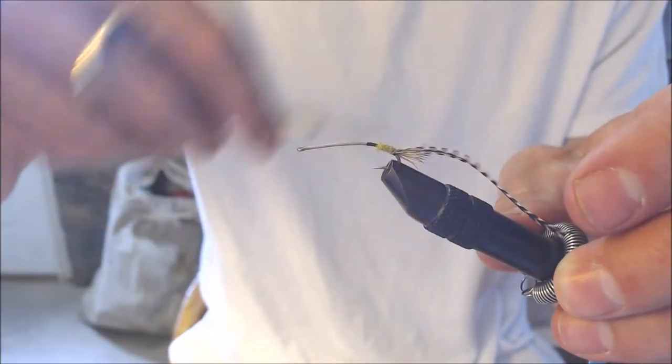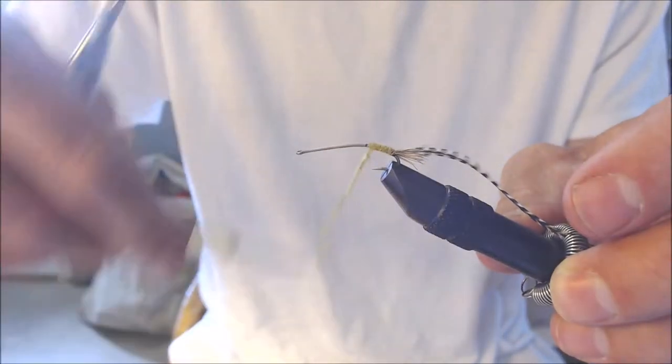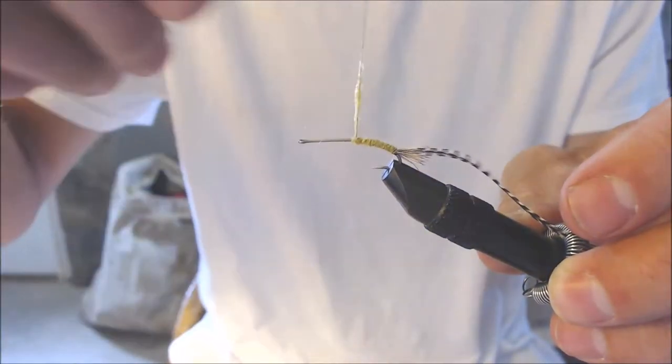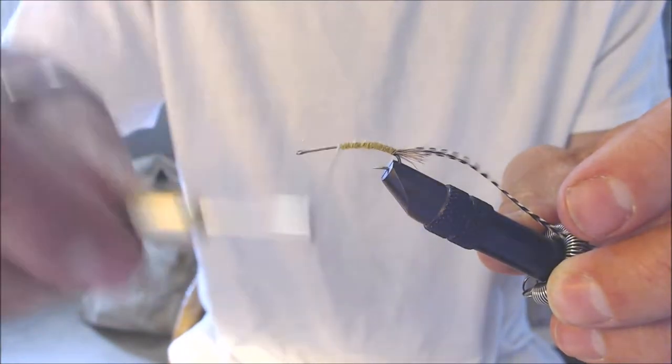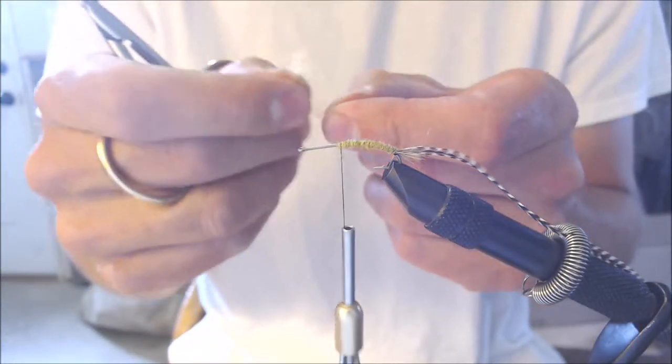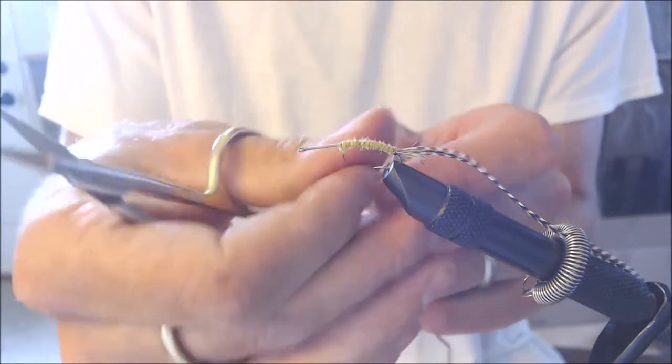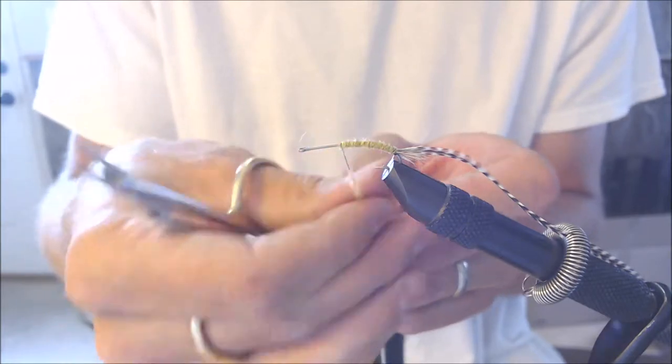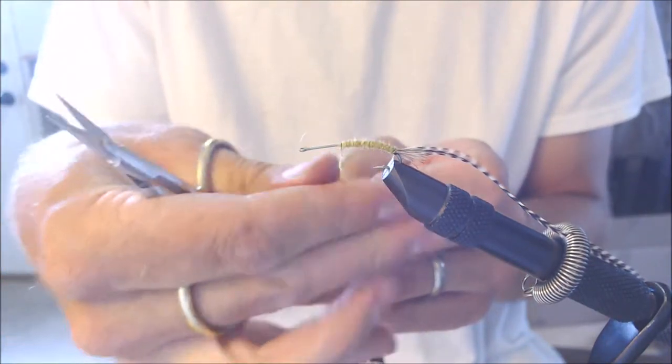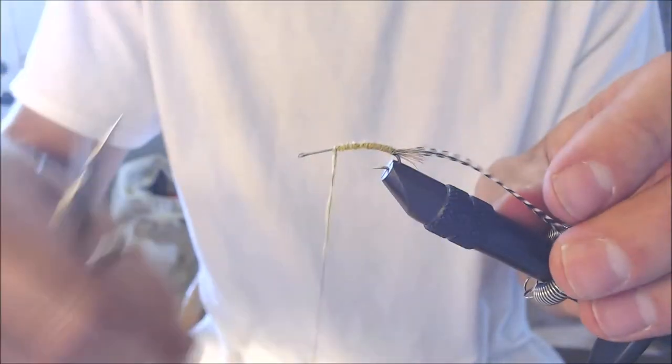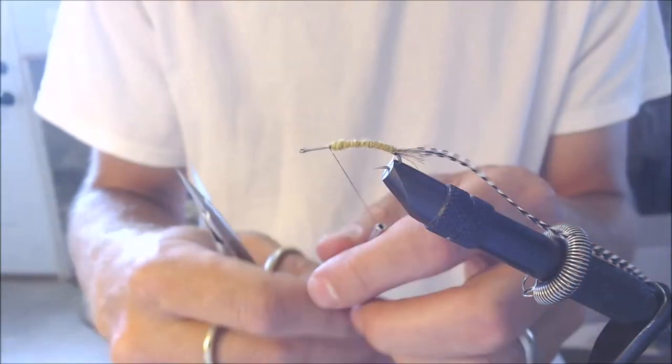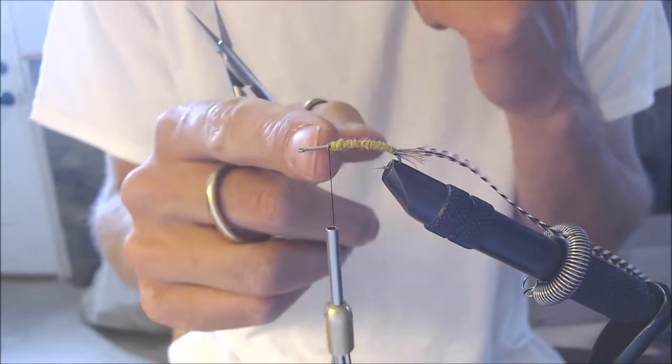So, I've got my dubbing on there. I'm going to wrap it onto the fly and just work my way forward. See if we have enough dubbing. I may have to put just a little bit more on. Looks like I'm going to run just barely short of where I wanted to get. So, I'm going to grab just a little bit more dubbing, put that on. There we go. That's about what we want right there. I left quite a bit of room because there's work to be done up here yet.